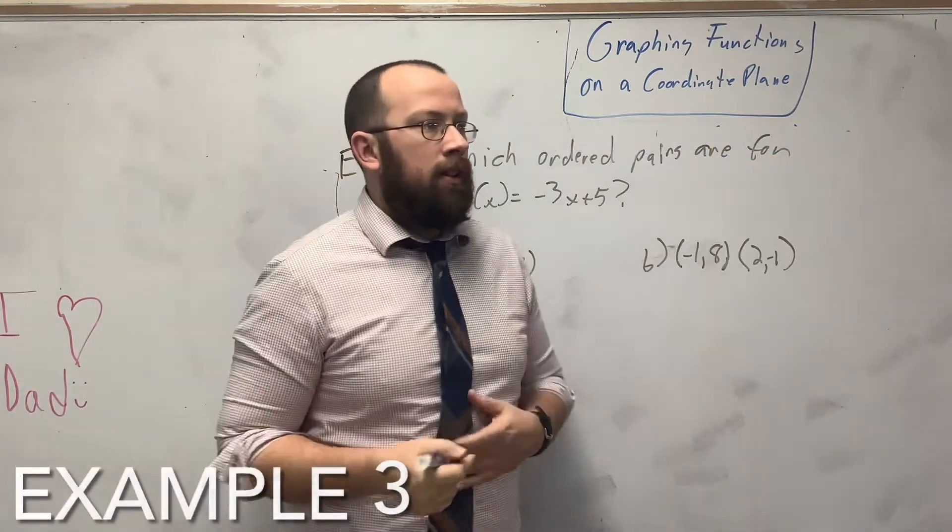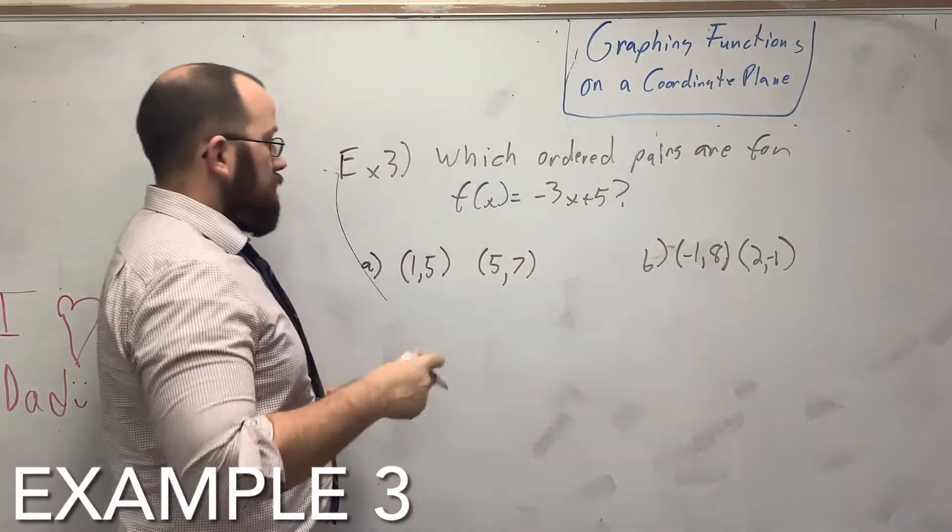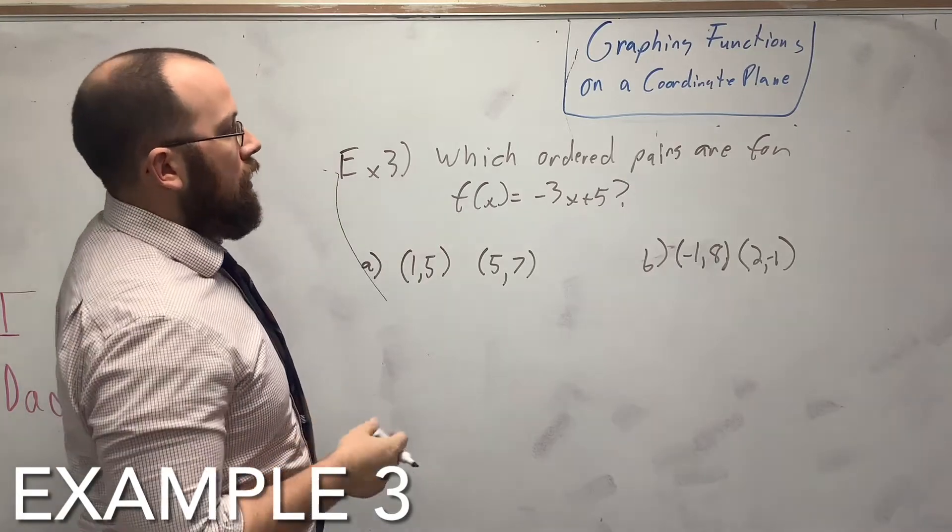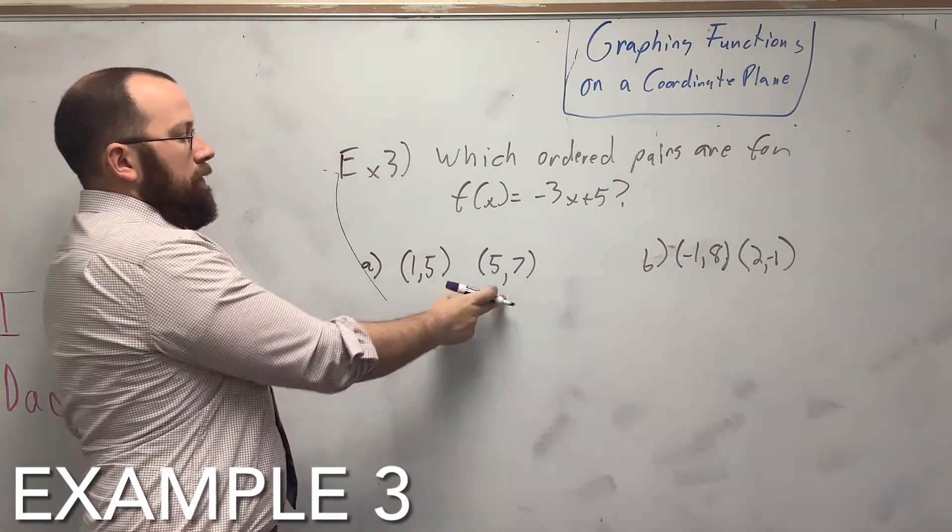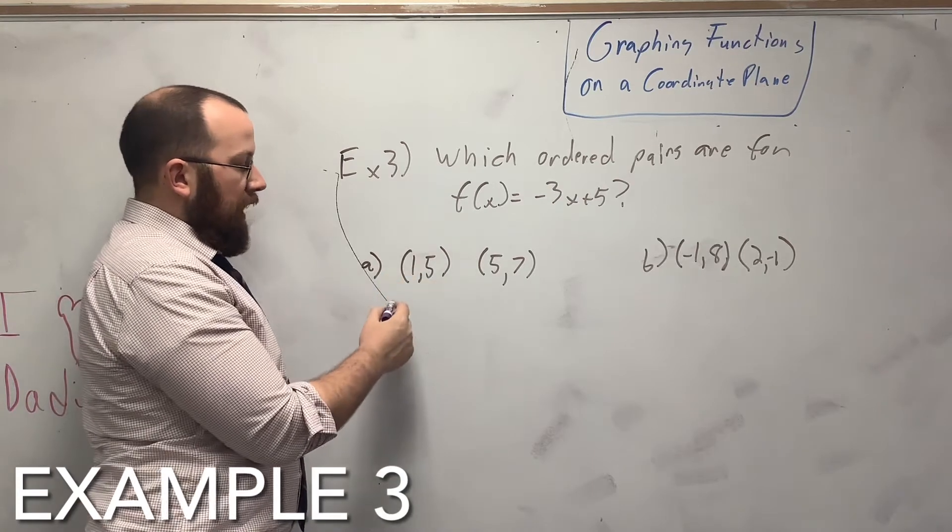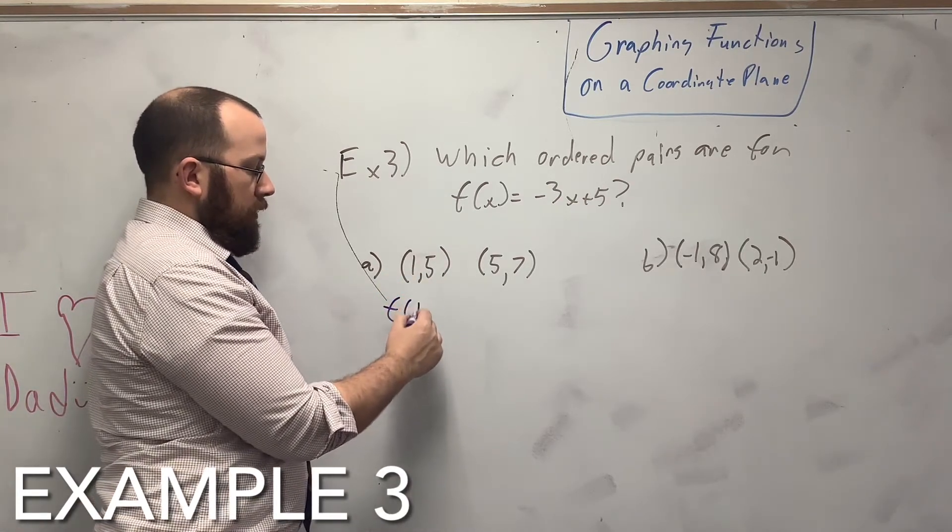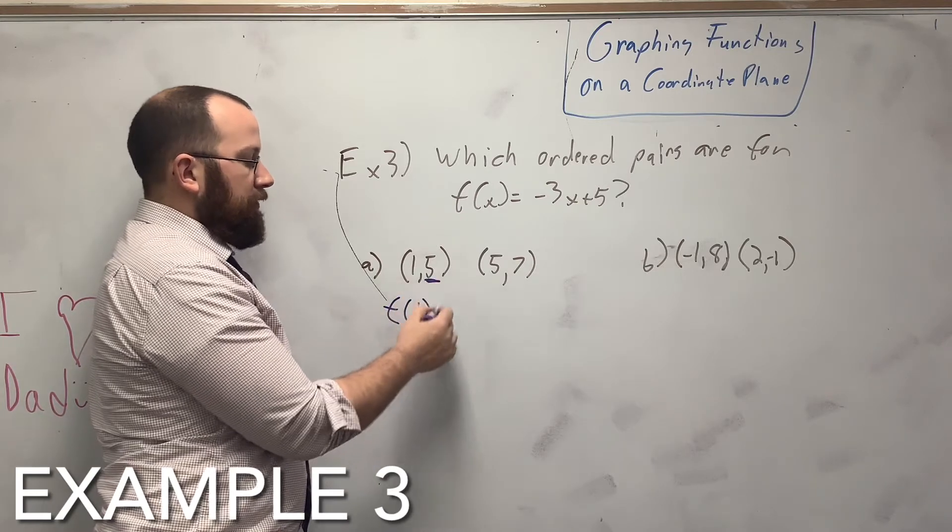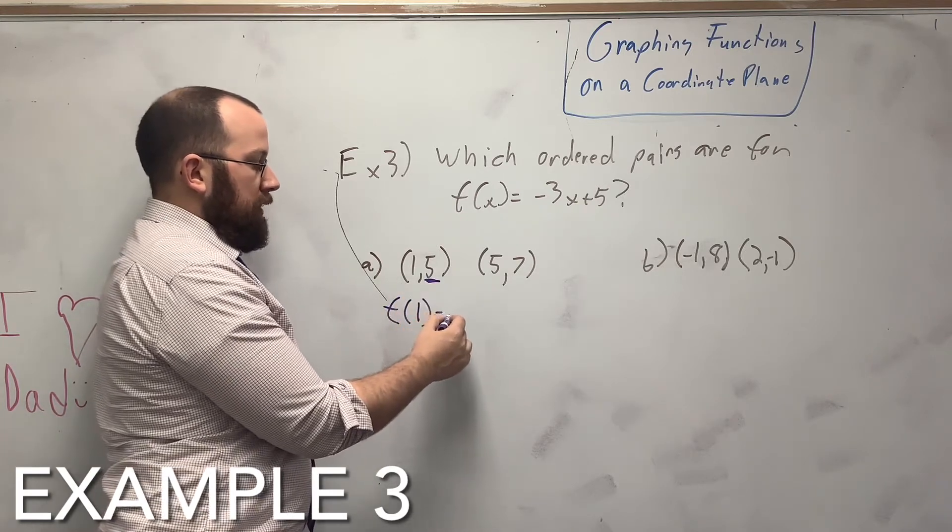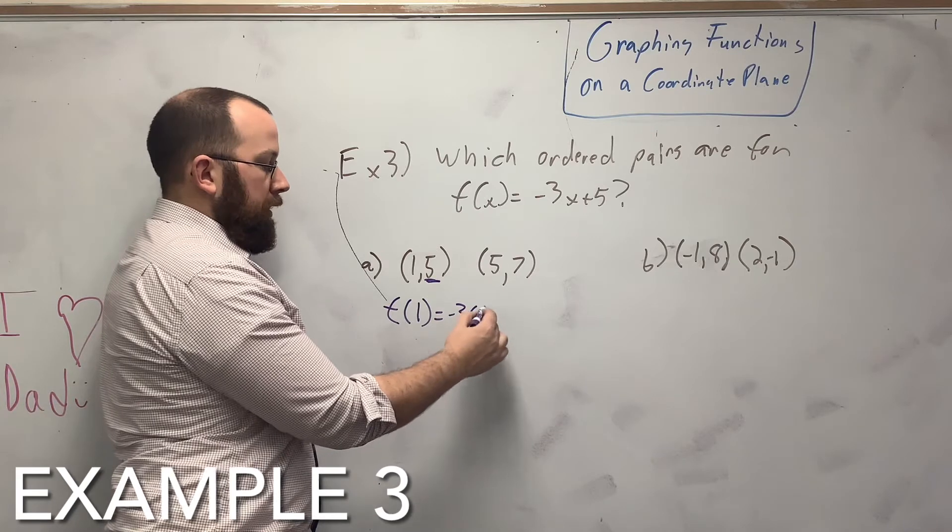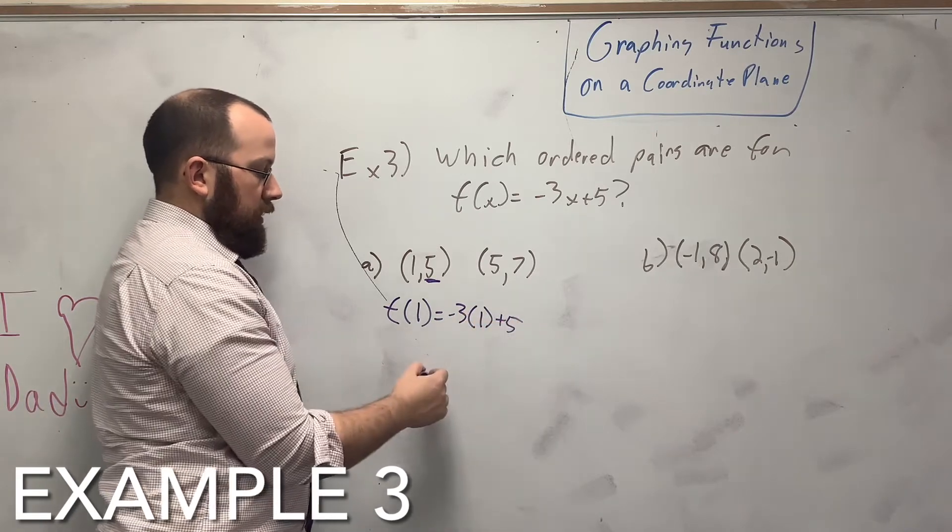Alright, here's our last one. So which ordered pairs are for that function? We have two sets of ordered pairs. So I'm going to take 1, 5 first. Say f of 1. So I should be getting 5 out when I'm done. Negative 3 times 1 plus 5.